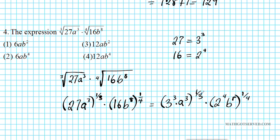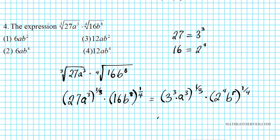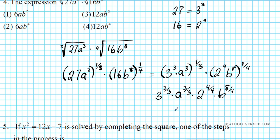Now just distribute this 1/3 to all of them and we have 3 to the 3 over 3 times a to the 3 over 3 times 2 to the 4 over 4 times b to the 8 over 4. If we simplify, this is 3 to the 1st power times a to the 1st power times 2 to the 1st power times b to the 2nd power.